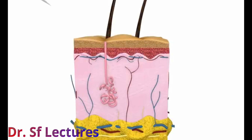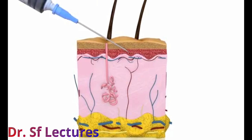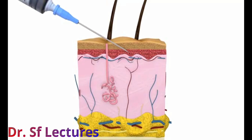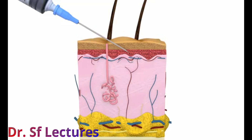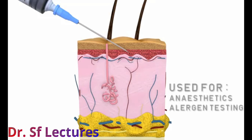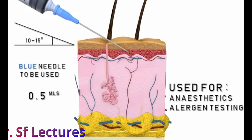The intradermal route is where medication is injected just below the top layer of the skin, the epidermis. As the injection site is not near any major muscles or blood vessels, the action of the medication is limited to the area of the injection site and is therefore primarily used for anaesthetics or allergy testing. A maximum amount of 0.5 mils of medication can be given. A blue needle should be used and inserted at a 10 to 15 degree angle.